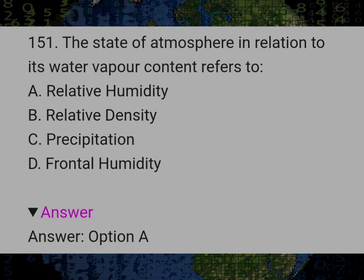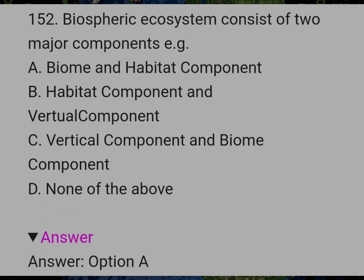The state of atmosphere in relation to its water vapor content refers to Answer A: Relative humidity. Biospheric ecosystem consists of two major components, Answer A: Biome and habitat components.